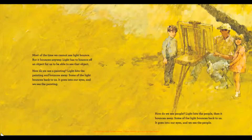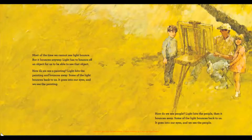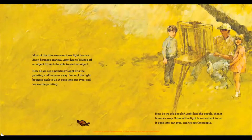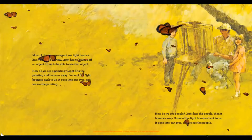Most of the time we cannot see light bounce, but it bounces anyway. Light has to bounce off an object for us to be able to see that object. How do we see a painting? Light hits the painting and bounces away. Some of the light bounces back to us — it goes into our eyes and we see the painting. How do we see people? Light hits the people, then it bounces away. Some of the light bounces back to us, goes into our eyes, and we see the people.